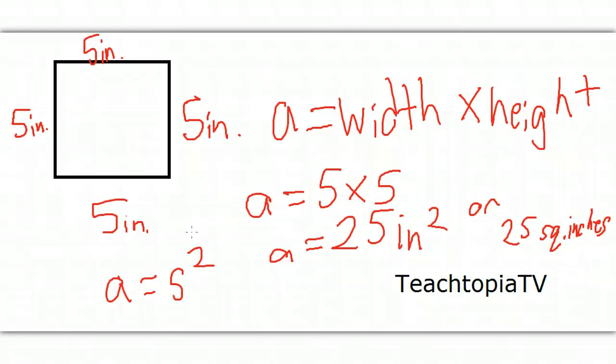Hopefully, it wasn't too confusing for you because the formula for area is simply multiplying two of the sides, and then we have our answer. This is Jody from TeachTopiaTV with a brief tutorial on how to find the area of a square. See you later.